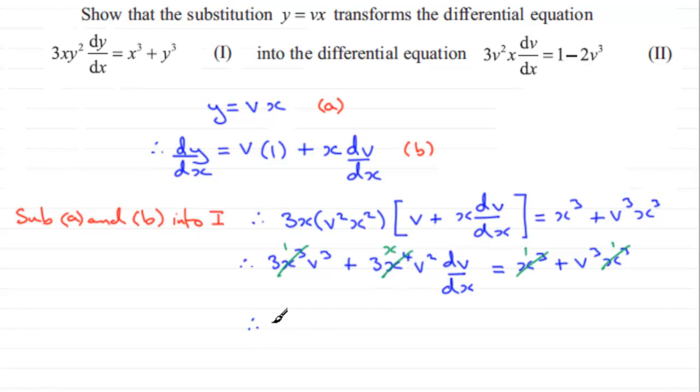And it equals the one that we have here, and if I subtract 3v cubed from both sides, we've got v cubed here minus the 3v cubed gives me minus 2v cubed, and that is what we had to show.